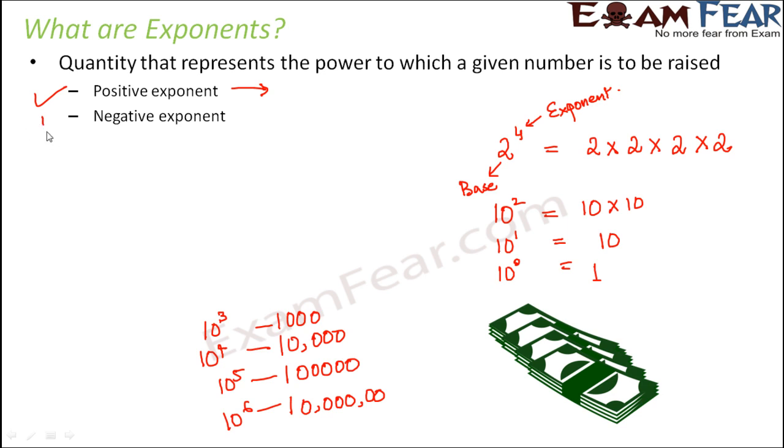But when it comes to smaller numbers, we deal with negative exponents. Something like this, 10 raised to the power minus 4, 10 to the power minus 1, 2 to the power minus 6, 7 to the power minus 15. In all these examples, the exponent is a negative number. This is called a negative exponent. A negative exponent is useful to handle smaller numbers or to represent very small numbers.